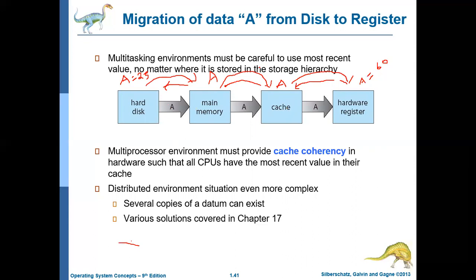If there is only one process, content updating is straightforward. But in a multi-processing environment, if multiple processes — say P1 and P2 — are sharing variable 'a', then when 'a' is updated to 60, that information must be known to both P1 and P2. If it is not known, it will create issues.